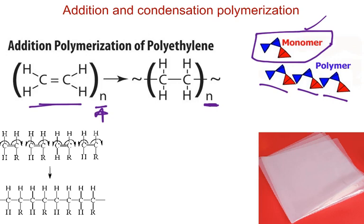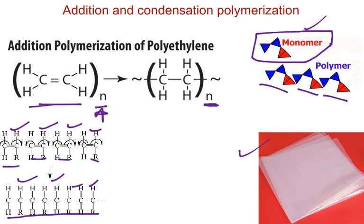For example, we have these links right here. They link together and you get that number of links in your polymer. These are individual units, and together they form a huge long molecule. Polymers are used in the production of clothing, plastic, and a whole variety of things.